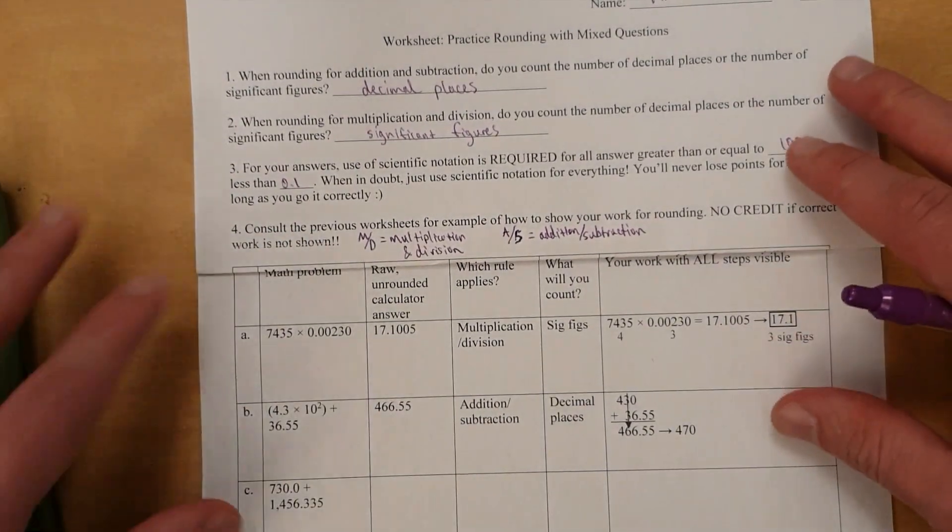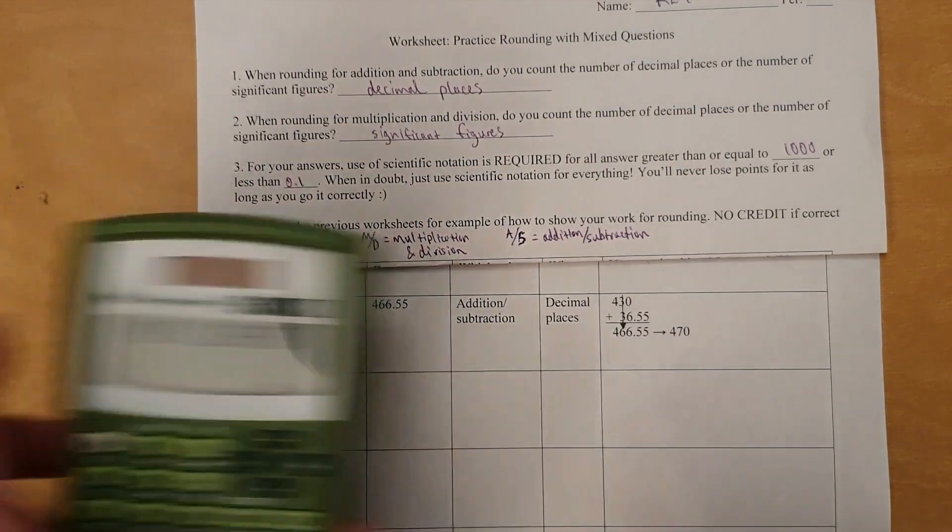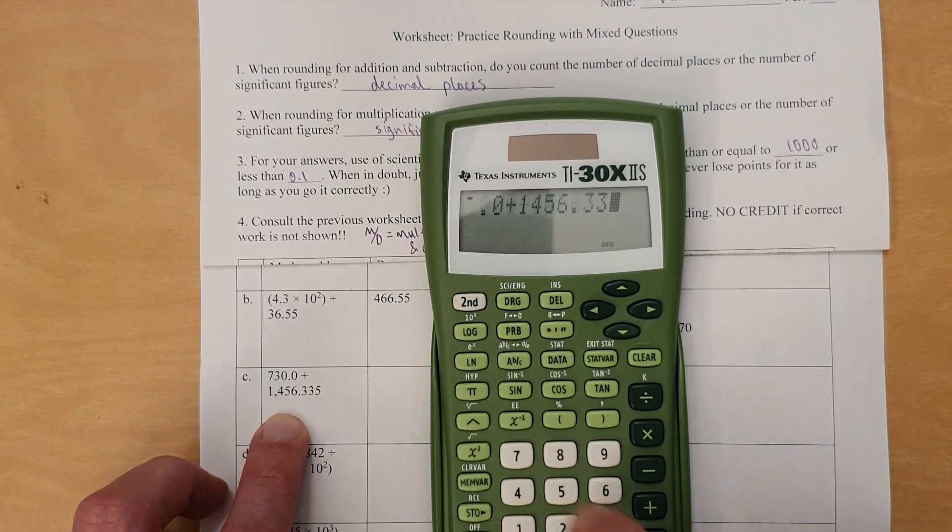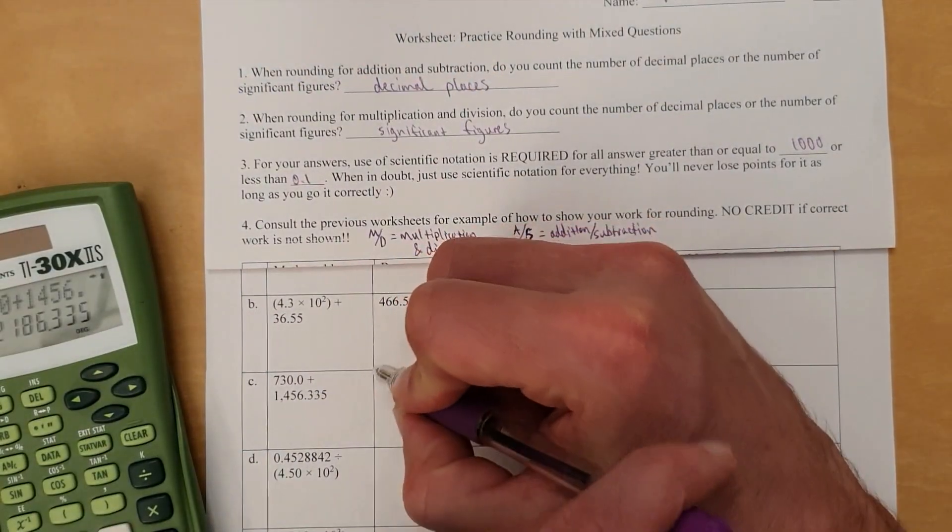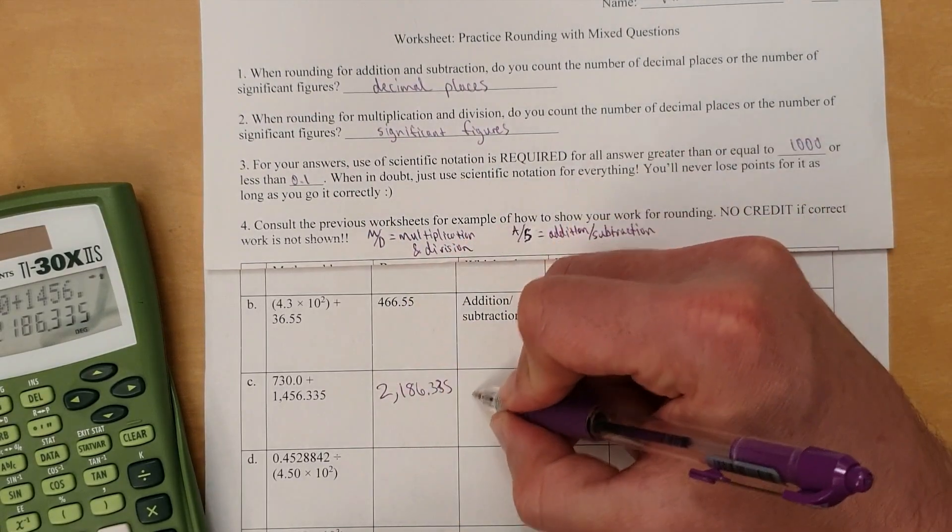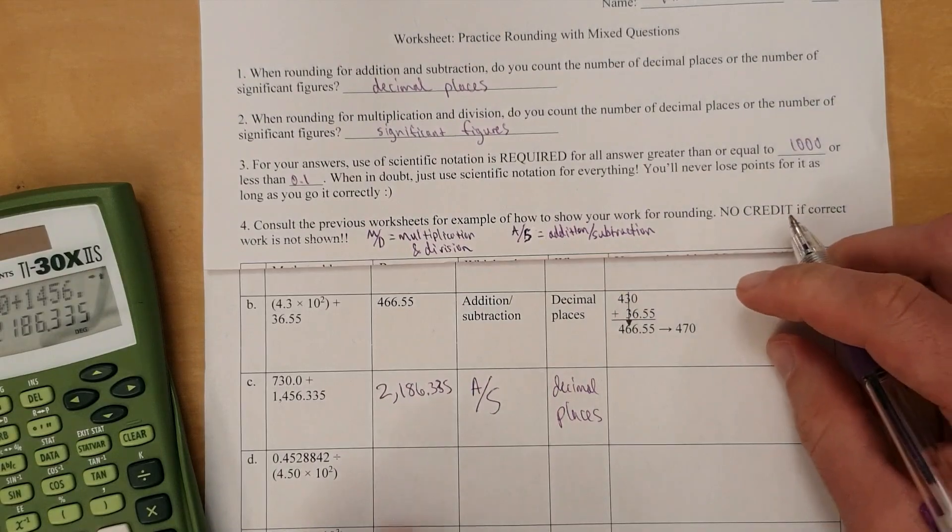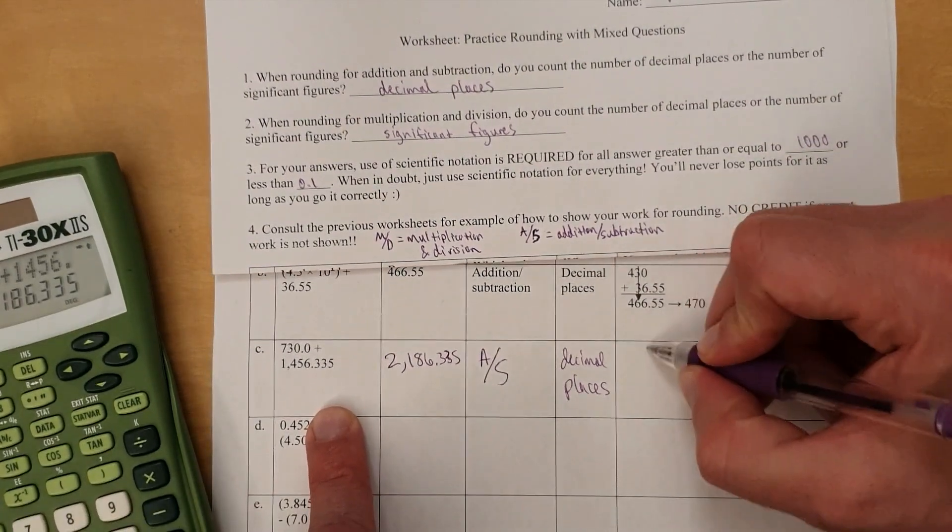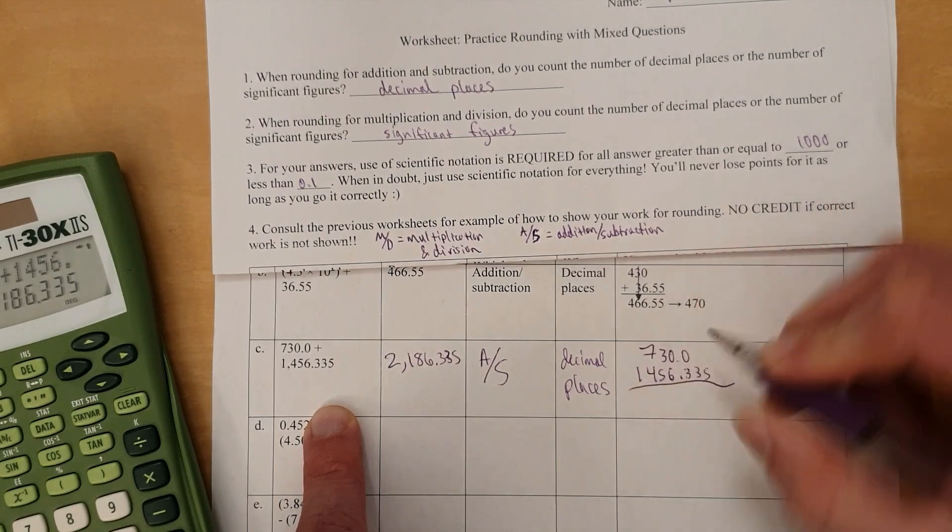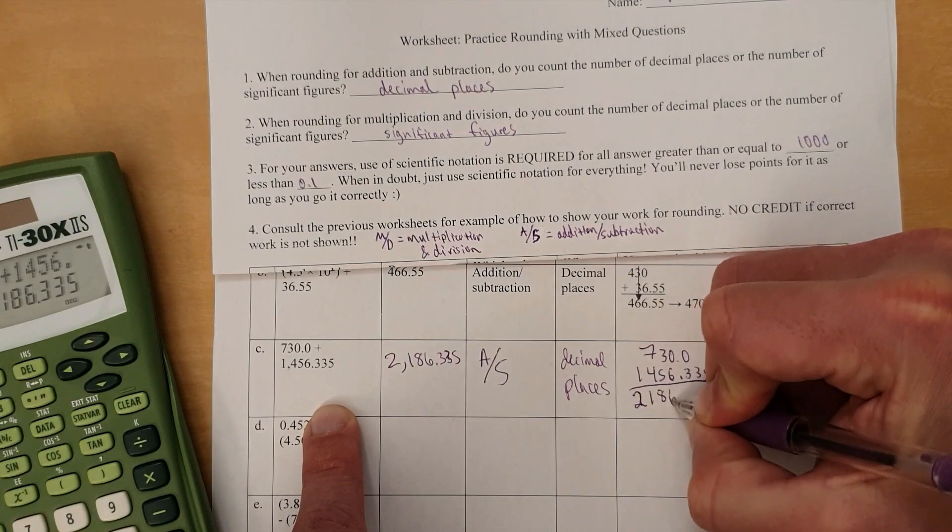To begin with, the first question. This one, 730.0 plus 1,456.335 gives that answer. So let's write that down. 2,186.335. Obviously, this is addition subtraction rules. We're counting decimal places. And let's stack them up, just like what's done here in this example. So 730.0, 1,456.335. Notice I aligned them so that the decimal places are in the same place. And it came out to 2,186.335.